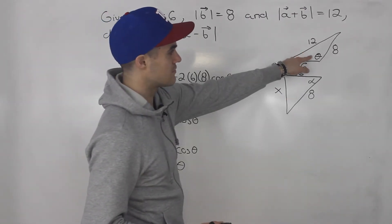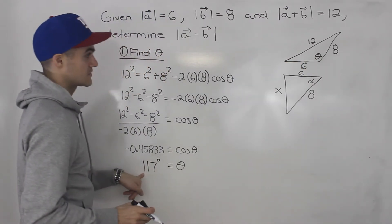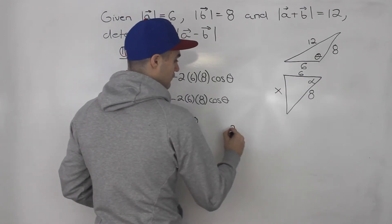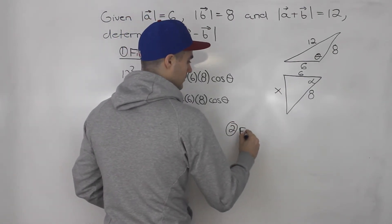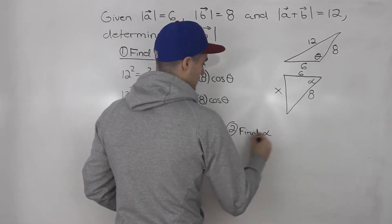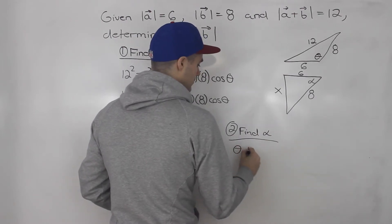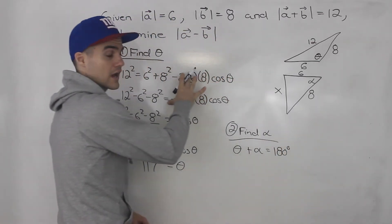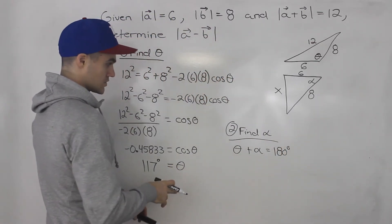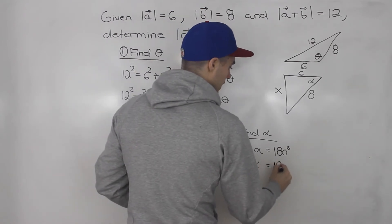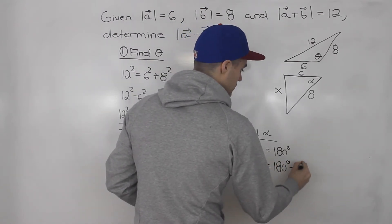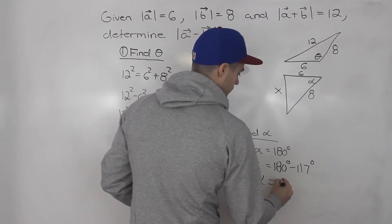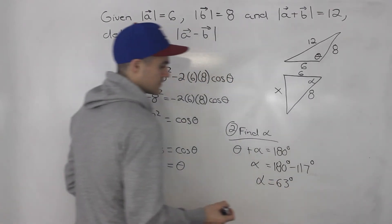So this angle theta is 117 degrees. Then for step two, we can find angle alpha. Because theta plus alpha had to equal 180 degrees — from the vector diagram. So alpha equals 180 degrees minus 117 degrees, which gives us 63 degrees.